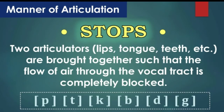Manner of articulation means the behavior of the airstream in the production of a certain sound. The first type to discuss is stop or plosive consonants. The airstream is completely blocked in the first stage, and the air that is blocked is released suddenly in the second stage. When the airstream is released suddenly, it produces a kind of explosive sound — that is why these sounds are also called plosive consonants.